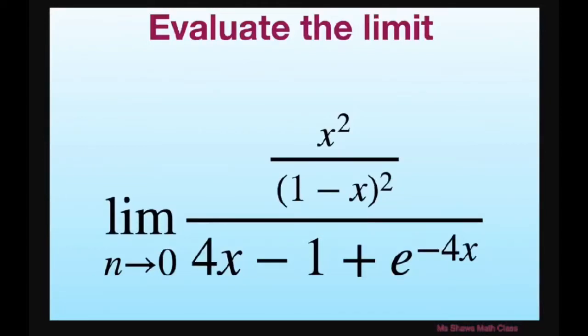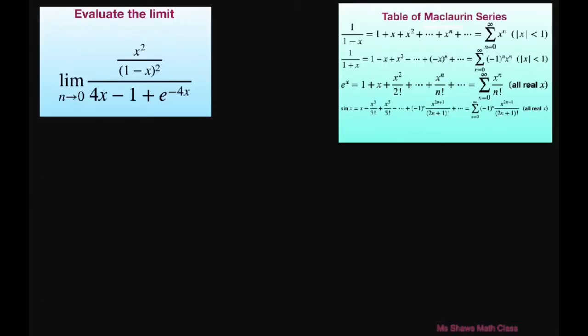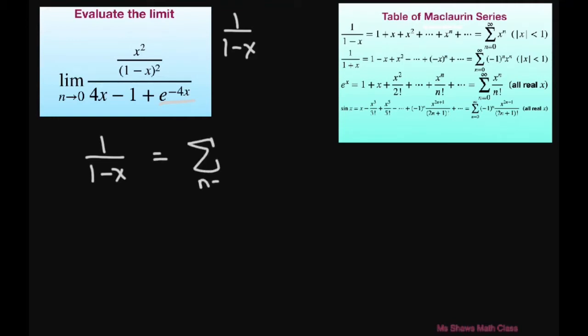Hi everyone. We're going to evaluate the limit given here for our function. We're going to use the table of the Maclaurin series for 1 divided by 1 minus x, and also e to the power of negative 4x. We don't have 1 divided by 1 minus x squared, but I notice that if I have 1 divided by 1 minus x, I know this equals the sum from n equals 0 to infinity of x to the power of n.